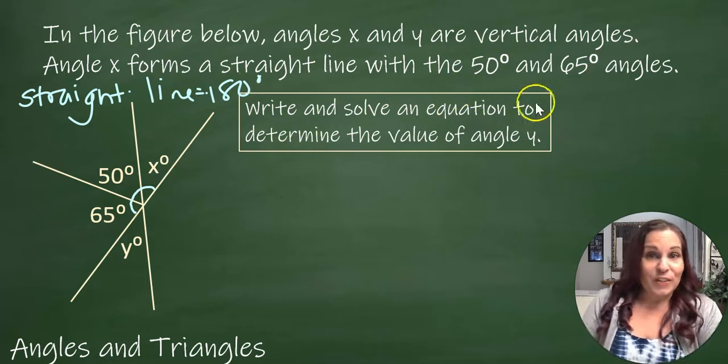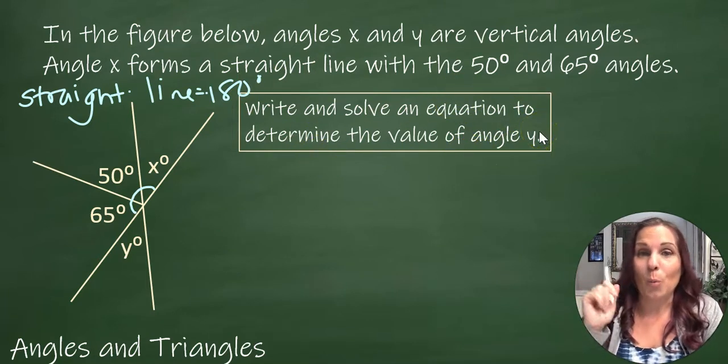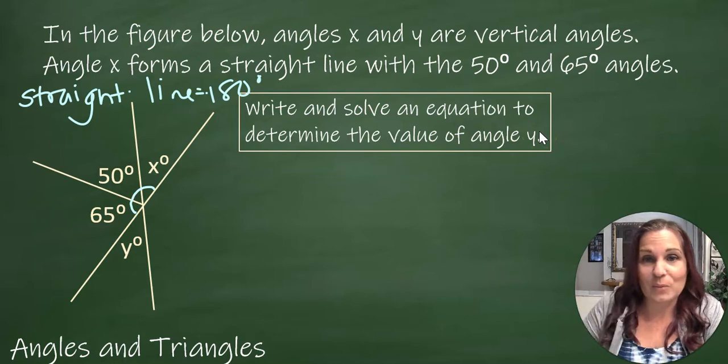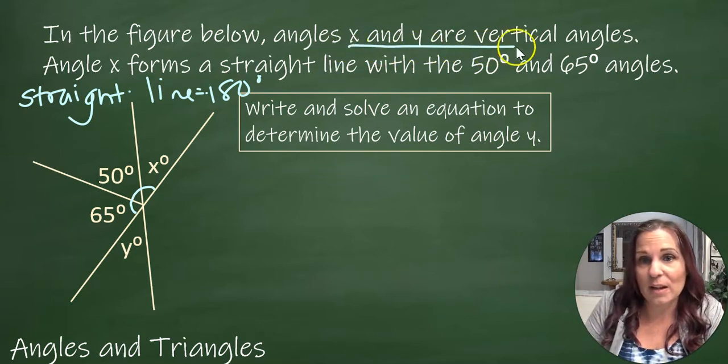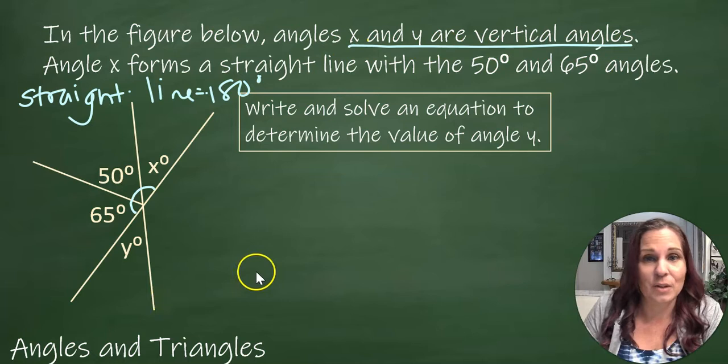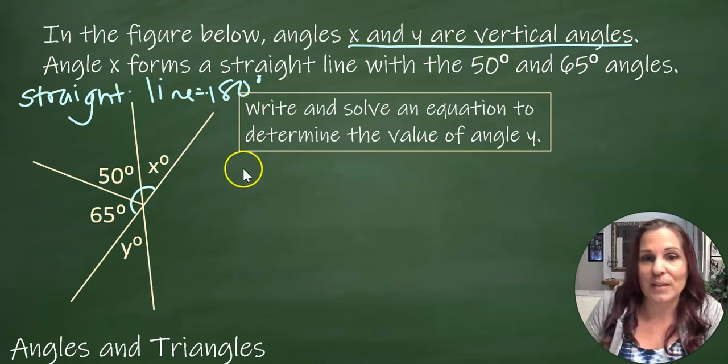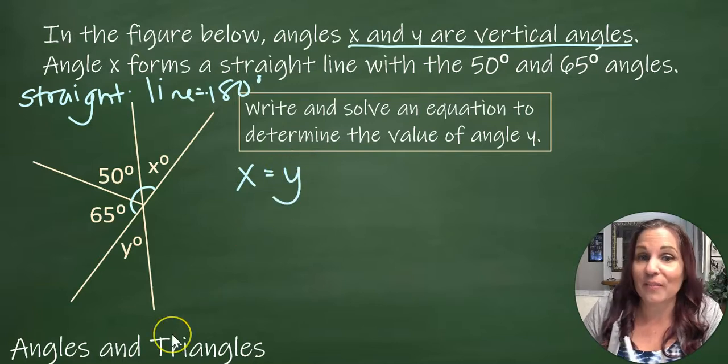Write and solve an equation to determine the value of angle Y. Now, from the beginning, X and Y are vertical angles. So we know that means whatever X is, Y equals the same thing. That's step number one. We know that X and Y equal the same number, the same angle measure.